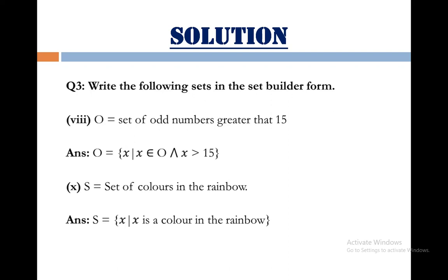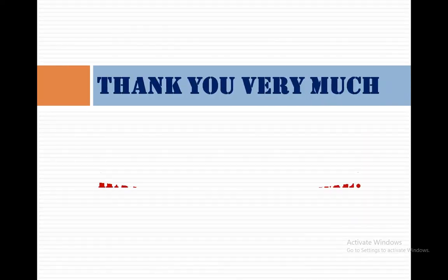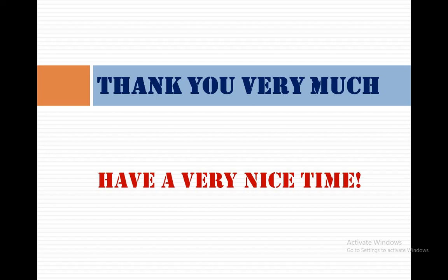Last part number 10 is, S equals set of colors in the rainbow. So writing the answer in set builder form as, S equals set of elements X such that X is a color in the rainbow, that completes our exercise 1.1. Hope you all understand and enjoyed today's topic. Thank you very much, have a very nice time.